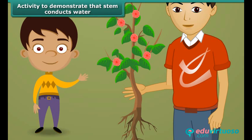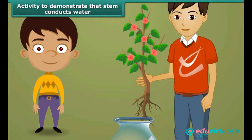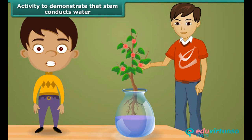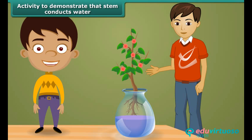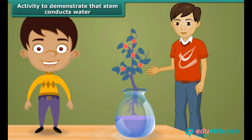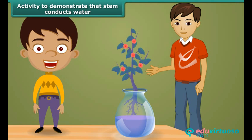Let us perform an activity to demonstrate that the stem conducts water. Take a balsam plant with roots and put it in a pot containing colored liquid. After a while, you will observe the same color in the stem, leaves, etc. of the plant. This proves that the stem conducts water from the roots to the other parts of the plant body.